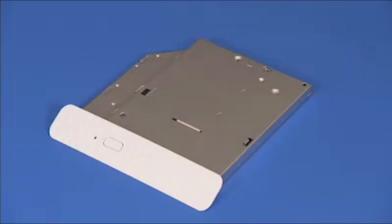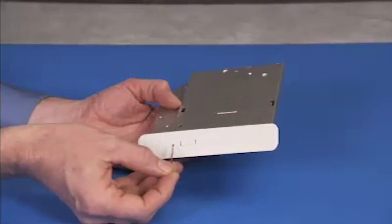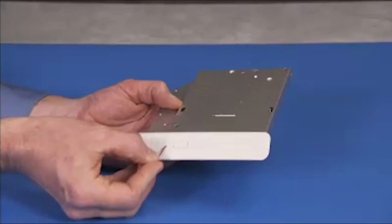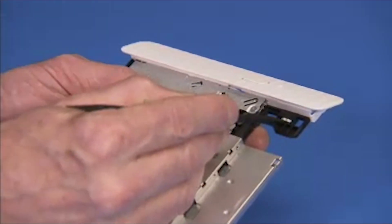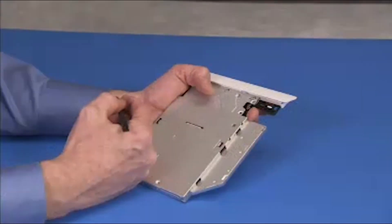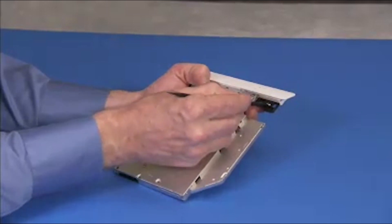To remove the bezel, use a straightened paper clip or similar tool to force eject the optical drive tray. Pry on the tab securing the bezel to the drive and pull the bezel firmly off of the drive.